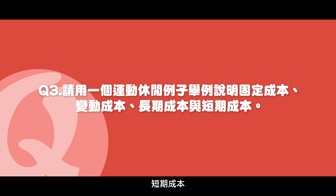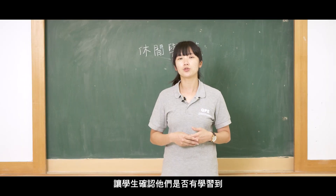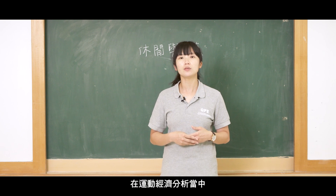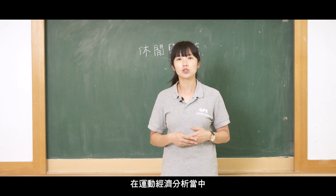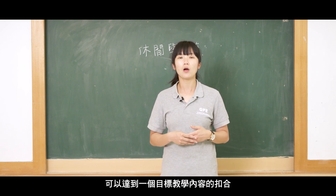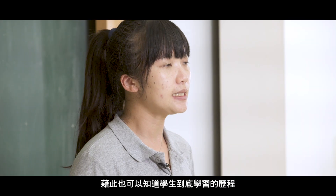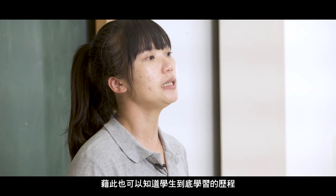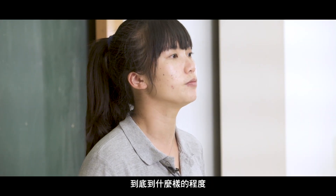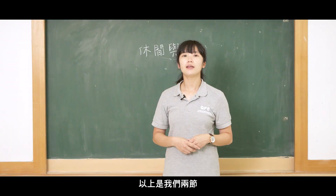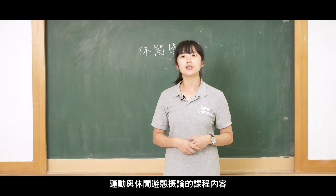第三個部分，我們還是要用運動休閒的例子去舉例，像是固定成本、短期成本、變動成本跟長期成本的一些關係。透過這些問題的引導，讓學生確認他們有學習到在運動經濟分析當中，可以達到一個目標、教學內容的扣合。藉此也可以知道學生學習的歷程到底到什麼樣的程度。以上是我們兩節運動與休閒概論的課程內容。